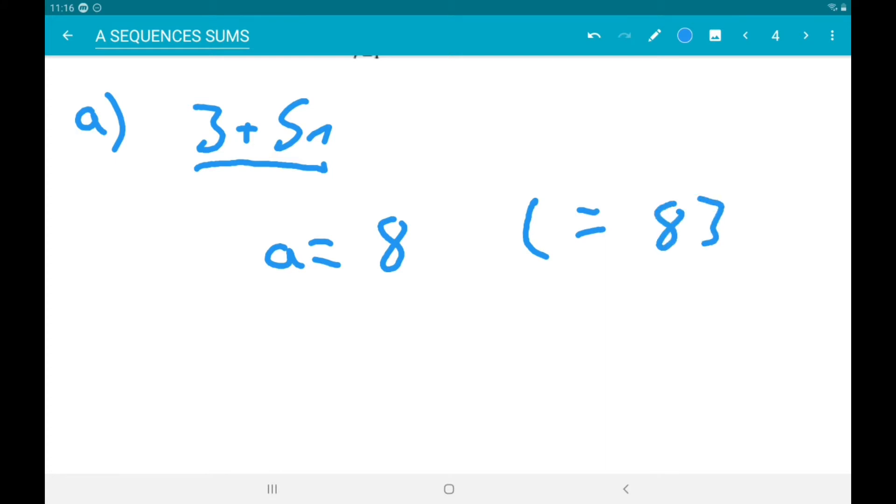So the sum to 16 is 16 over 2 times the first and last term, 8 plus 83. Now that gives us 728.